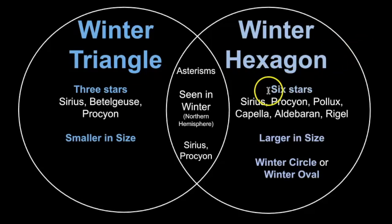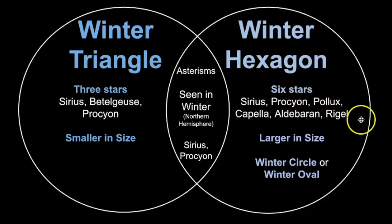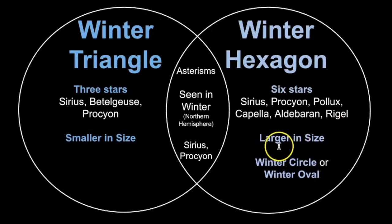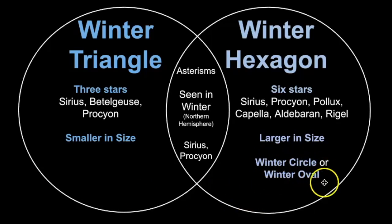The winter hexagon is made up of six stars: Sirius, Procyon, Pollux, Capella, Aldebaran, and Rigel. It takes up more real estate in the sky and is definitely larger in size — in fact, the winter triangle sits within it. I've also heard the winter hexagon called the winter circle or the winter oval.